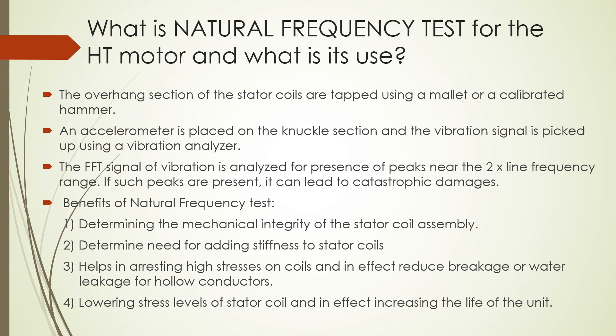The eighth question: what is the natural frequency test for an HT motor and what is its use? The overhang section of the stator coil is tapped using a mallet or calibrated hammer. An accelerometer is placed on the knuckle section and the vibration signal is picked up using a vibration analyzer. The FFT signal of vibration is analyzed for presence of peaks near two times the line frequency range. If such peaks are present, it can lead to catastrophic damage. Benefits include: determining the mechanical integrity of the stator coil assembly, determining the need for adding stiffness to stator coils, assessing high stresses on coils, reducing breakage or water leakage for hollow conductors, and lowering stress levels to increase the life of the unit.